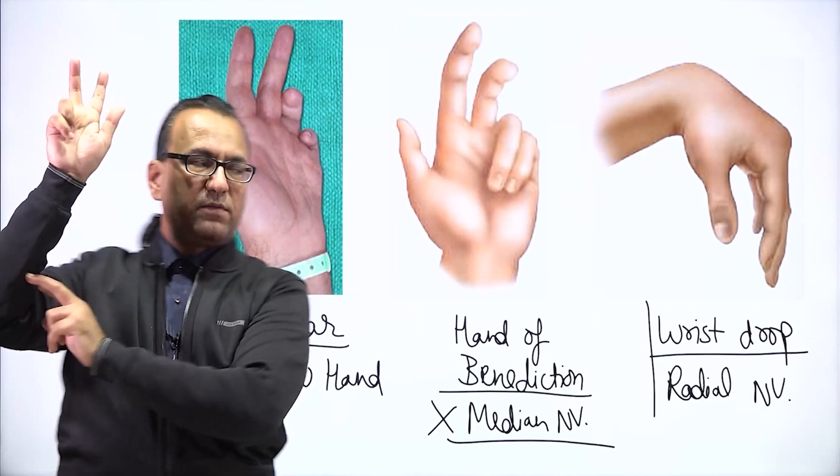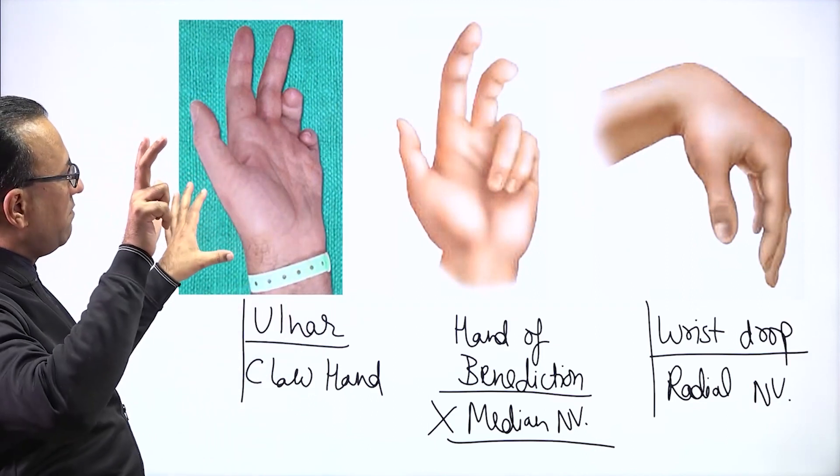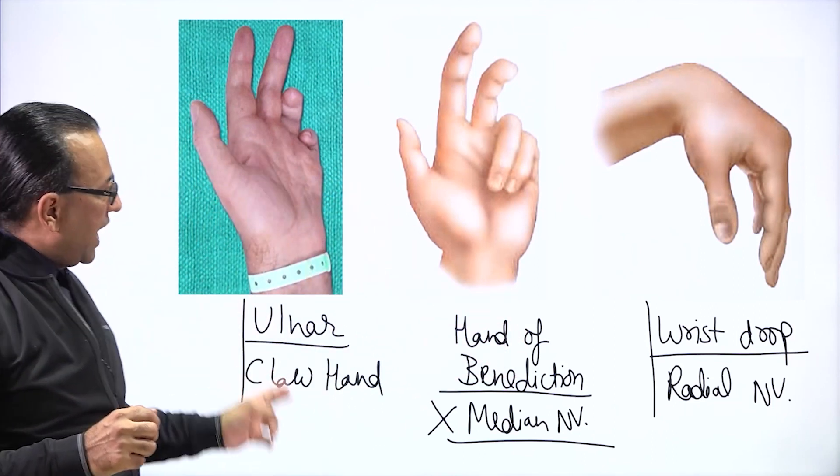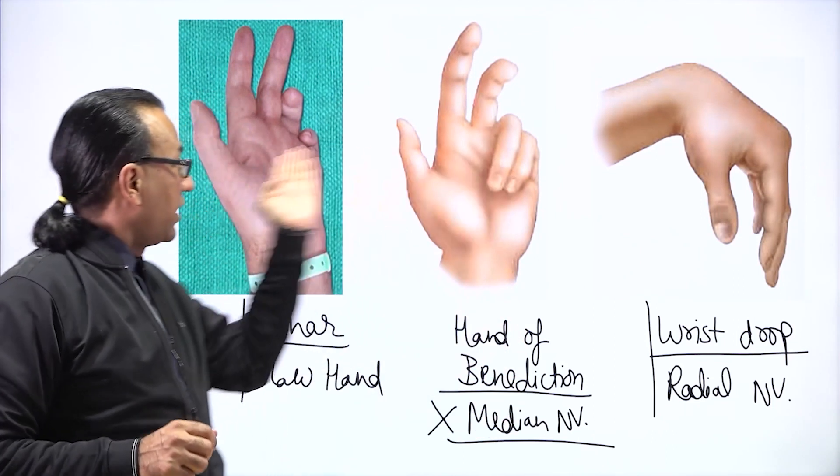Pointing index. Okay, fine. But still, when somebody gave me these two diagrams, how can I immediately tell this is ulnar nerve injury and this is median nerve injury, because they are appearing the same?